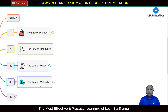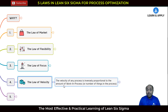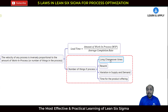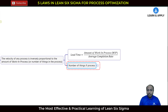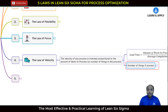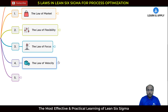The fourth law is the law of velocity. The velocity of any process is inversely proportional to the amount of work in process — the number of things in the process. These can include long changeover times, rework costs and scrap, variation in supply and demand, or time for product offering. These are examples of factors that add more work in process into your processes.